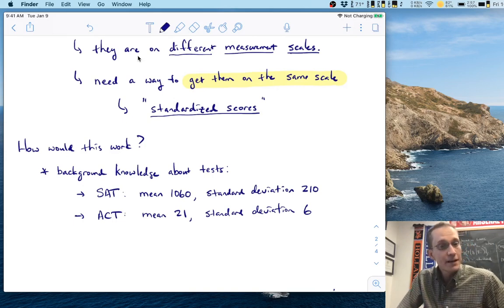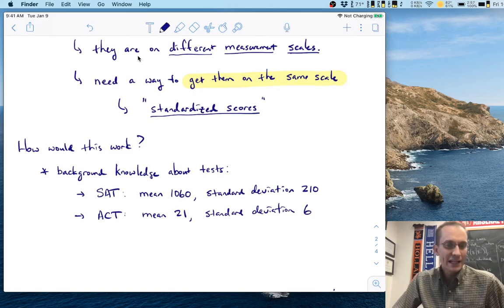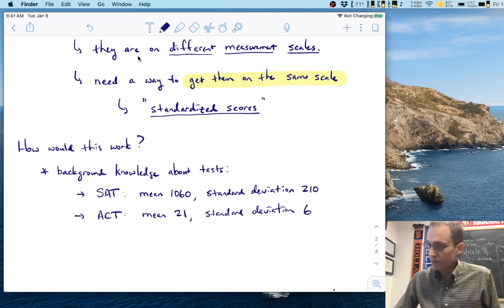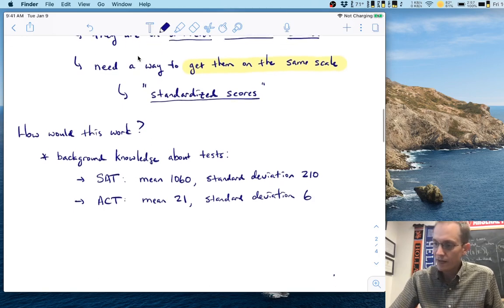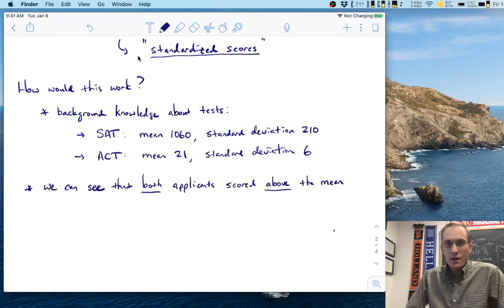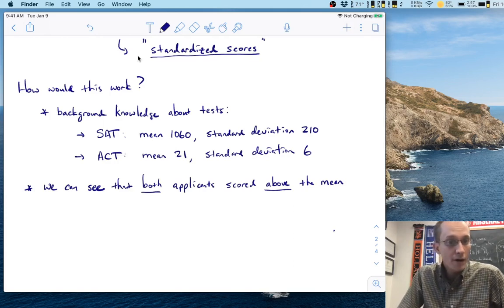is about 210 points. So on average, we can expect people to deviate 210 points from that center score of 1060. The same thing can be said for the ACT. Turns out that the mean ACT score is 21, with a standard deviation of about six. Now again, if you go and look these up, depending on when you do it, you might find slightly different numbers because they re-norm these tests periodically. And plus, I'm using whole numbers to ease the exposition here. But the point remains.